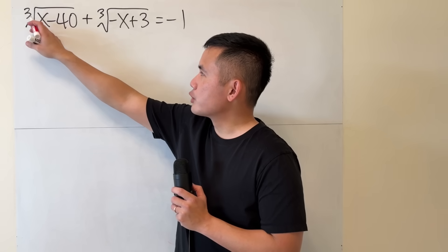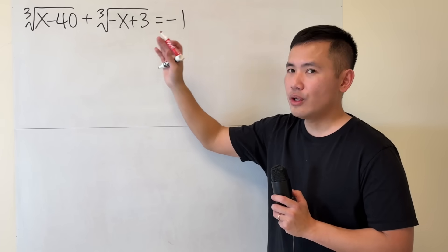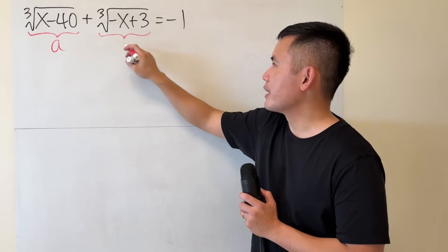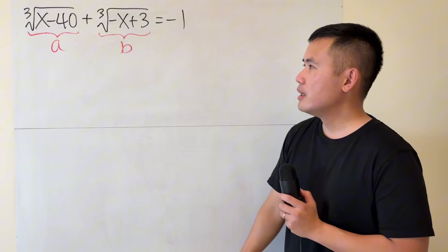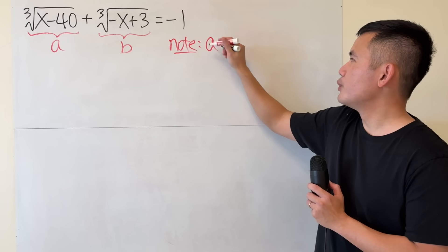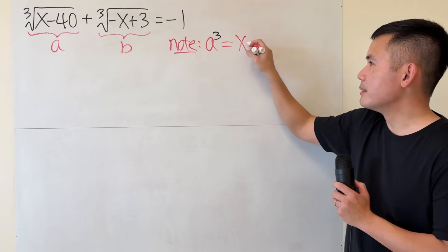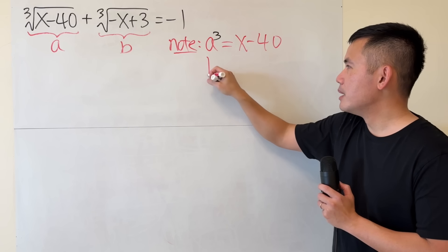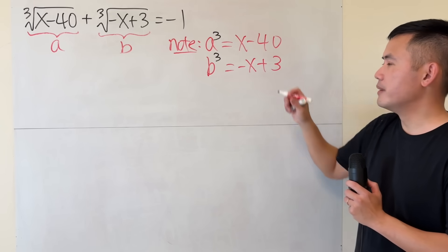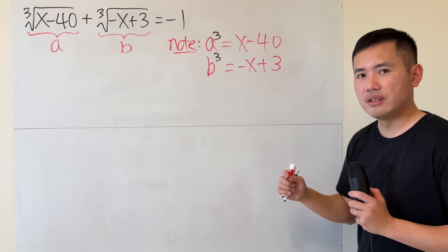Well, I really want to get rid of this cube root, but I cannot cube the left hand side. So why don't I just look at this by itself? I will call this to be a, and do the same thing right here, call that to be b. So if you look at this right here and just raise that to the third power, we will get the inside only, which is x minus 40. Similarly, b cube will be negative x plus 3. And when we combine them, the x and negative x will cancel, we get negative 37.